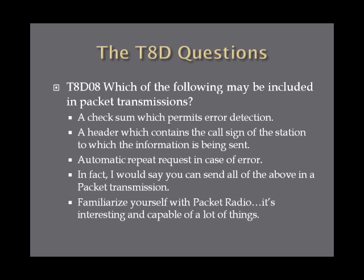Which of the following may be included in packet transmissions? Packet radio is a very popular form of data communication, usable similarly to how we use email over the internet. Things you can include in a packet transmission include a checksum which permits error detection, a header containing the call sign of the station to which the information is being sent, and an automatic request in case of error. In fact, all of the above can be included in a packet transmission.